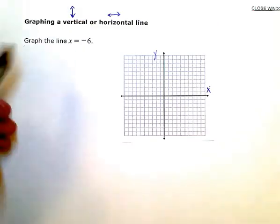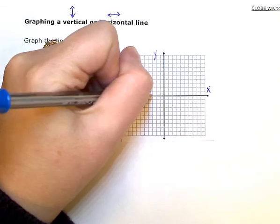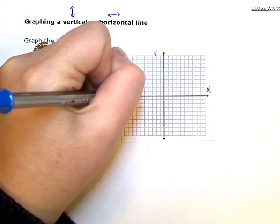So on the x-axis, at negative 6—1, 2, 3, 4, 5, 6—I'm going to put a dot.